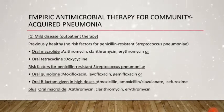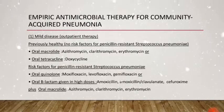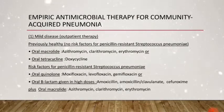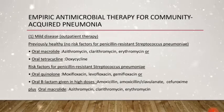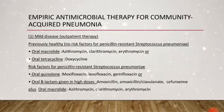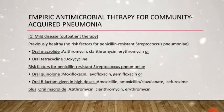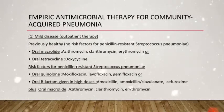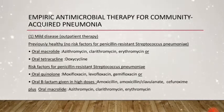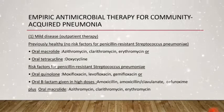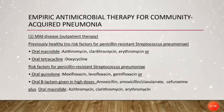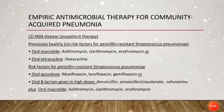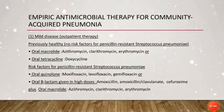For patients who have risk factors for penicillin-resistant Streptococcus pneumoniae — that is, patients with asthma, alcohol abuse, COPD, diabetes mellitus, age above 65, or antibiotic use within the past 3 months — treatment options include monotherapy with an oral quinolone such as moxifloxacin, levofloxacin, or gemifloxacin, or a combination therapy of an oral beta-lactam plus an oral macrolide. Beta-lactam options include amoxicillin, amoxicillin-clavulanate, or cefuroxime, combined with azithromycin, clarithromycin, or erythromycin.